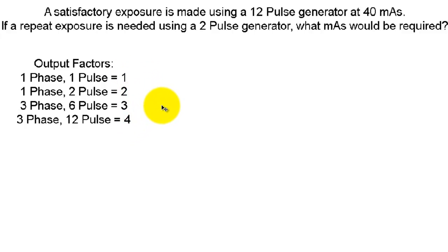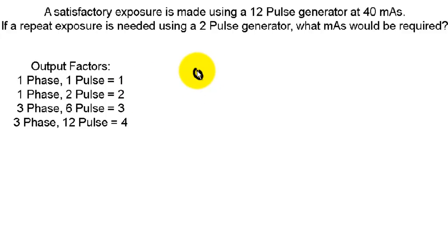Our formula is output factor 1 over output factor 2 equals mAs 2 over mAs 1. So they're inversely proportional. And unfortunately you're not going to have this output factor key here on your test, so you're going to have to memorize these.